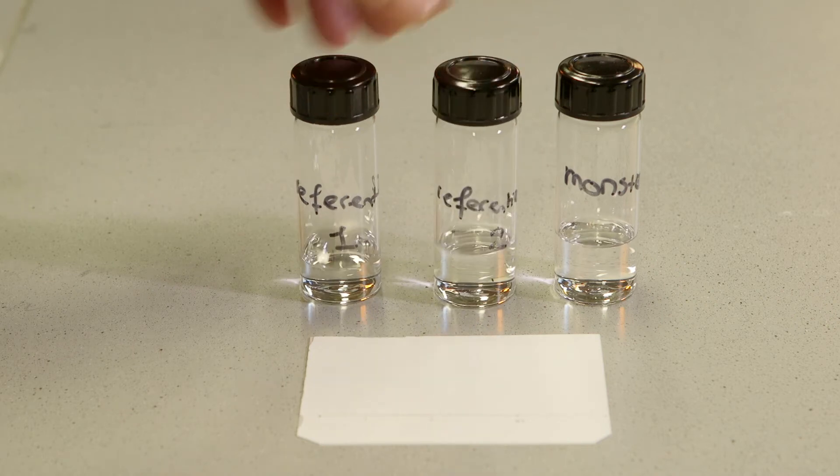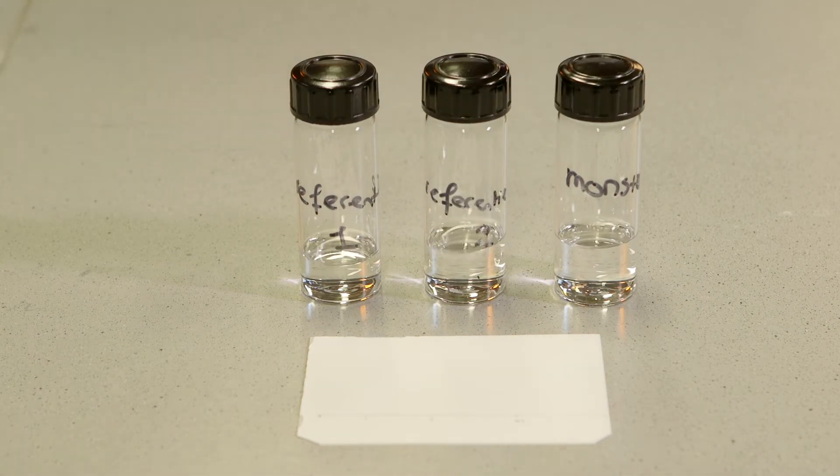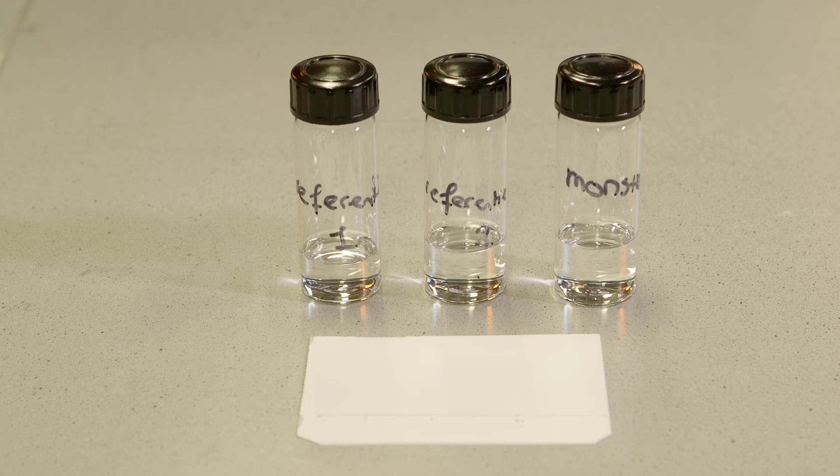The corners of the TLC plate are cut so that the solvent will rise uniformly. Dots are drawn on the line and are numbered to be able to identify the samples and the reference solutions.